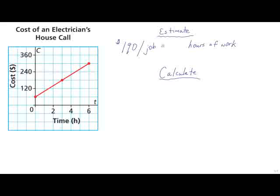So to estimate how many hours of work equals $190, we're going to use that $190 and look at where it lies on this graph, on the line on the graph. And if you notice our graph, we have increments of 120. So we have an increment of 60 here. 60 plus 60 is 120, plus another 60 will give us 180, plus 60 is 240.